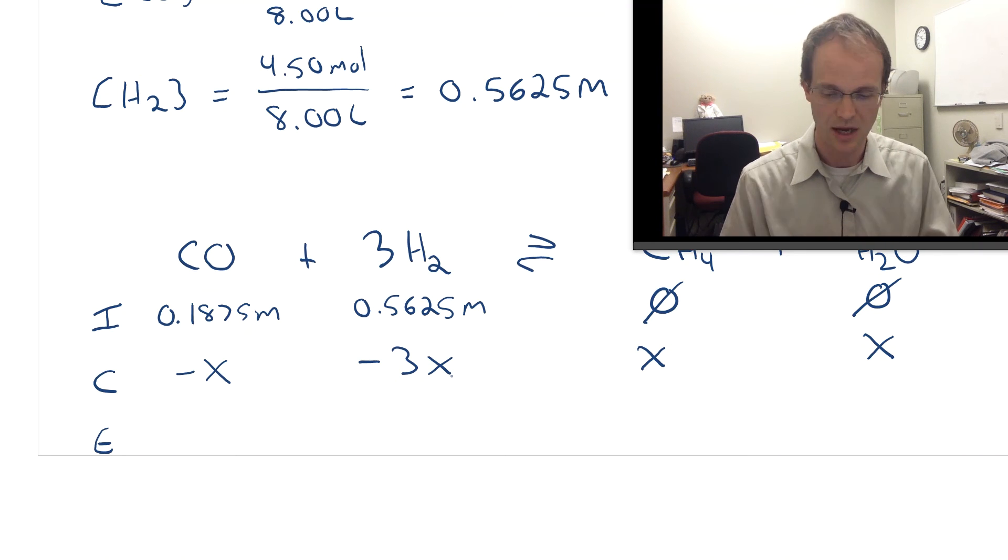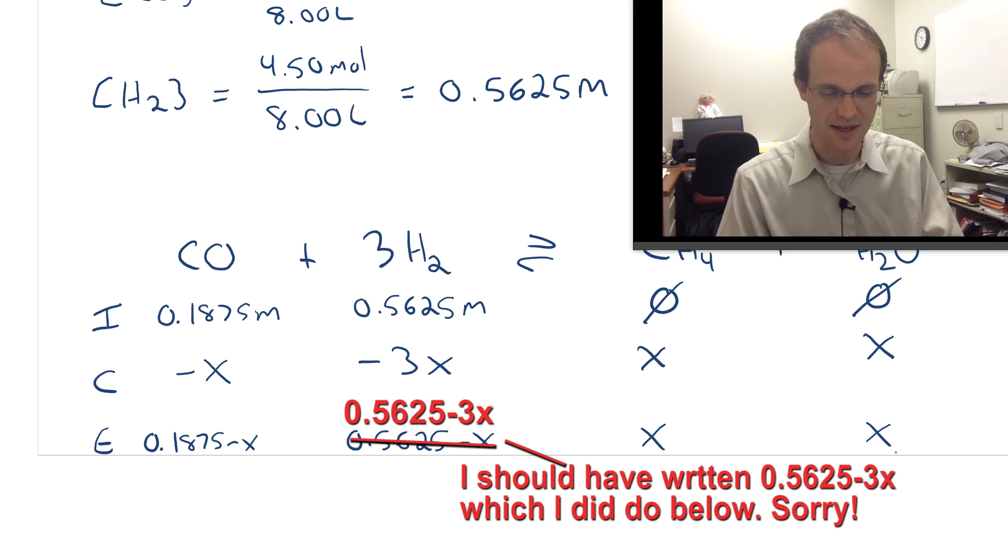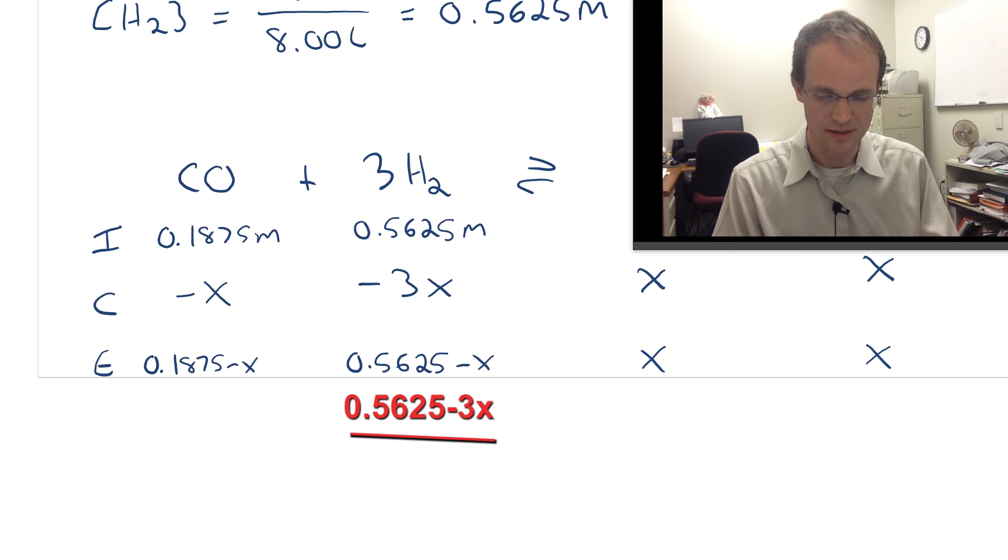The E line is the easiest line. You just add up the I and the C—your initial and your change. So I get 0.1875 minus X, 0.5625 minus 3X, X, and X. You notice I'm not even putting the molars in anymore. I like to put it in that first line, but to save time people often forget it there. It's important to put it somewhere though, because sometimes we do things in millimoles in these tables, and we want to make sure we know we're doing things in molarity.